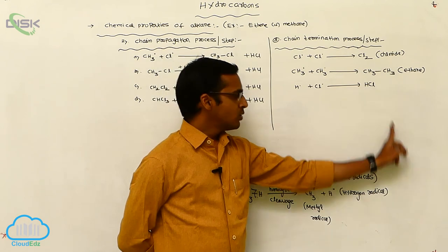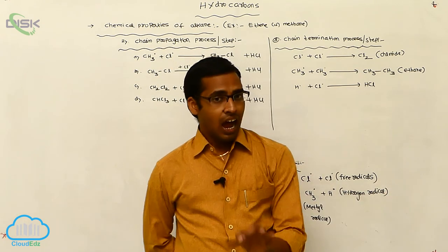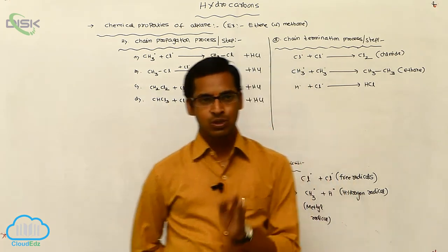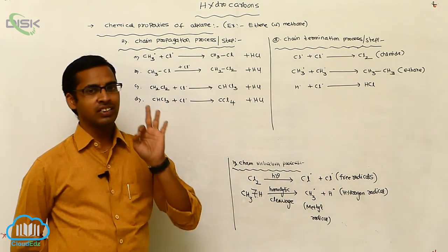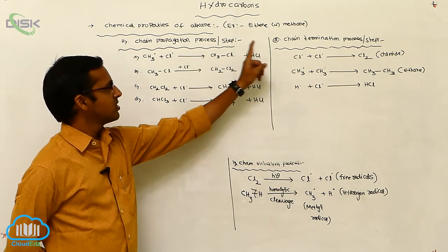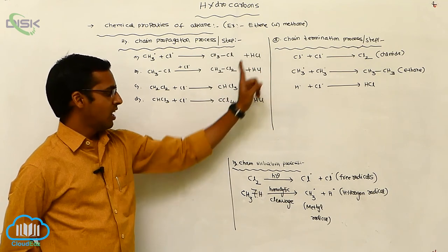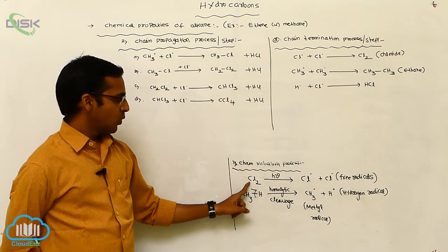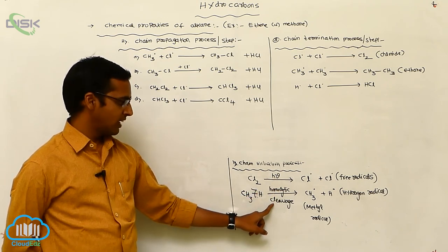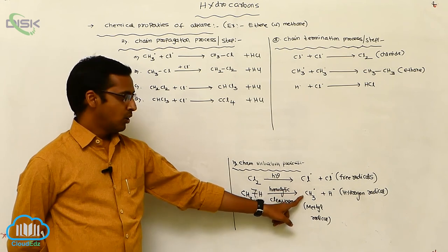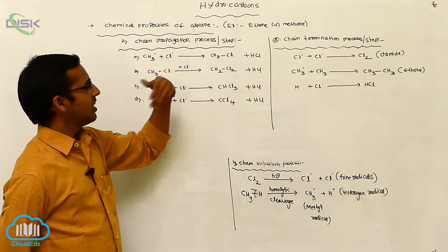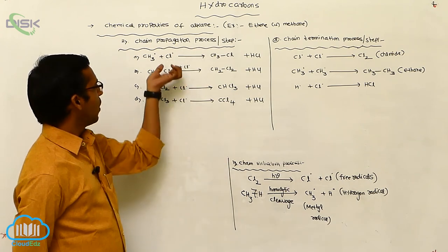So the alkanes are participated in substitution reactions. These substitution reactions are involved in three steps: chain initiation process, chain propagation process, and chain termination process. In chain initiation process, the chlorine molecule undergoes photochemical conditions through homolytic cleavage and produces radicals. In chain propagation process, the chain is extended by addition of radicals.